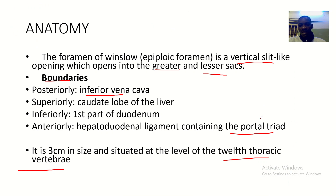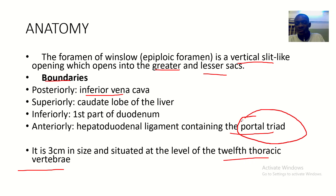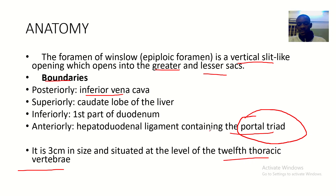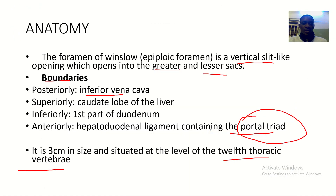The inferior vena cava, hepatic artery, and portal vein are all nearby — the hepatic artery and portal vein are contained in the portal triad. So everything around the foramen of Winslow is highly vascular, and if you incise it carelessly, you risk serious internal abdominal bleeding. That wraps up the foramen of Winslow and its applied anatomy — see you in the next tutorial!